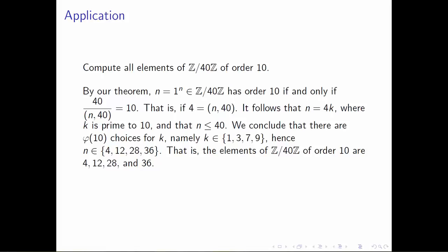If this is to be the case, it follows that n is going to be 4 times k, where k is an integer—but not just any integer. It's going to be an integer coprime to 10. And we want n to live in Z mod 40, so n has to be less than 40. So n equals 4k, k must be coprime to 10, and n must be less than or equal to 40.